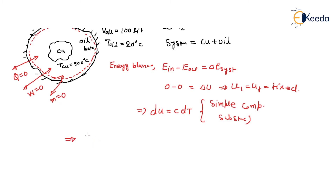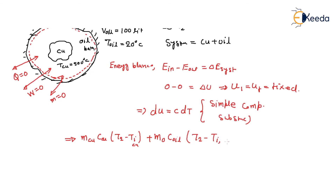The internal energy equation gives: mass of copper times specific heat of copper times (T2 minus initial temperature of copper) plus mass of oil times specific heat of oil times (T2 minus initial temperature of oil) equals zero. Solving this gives a final equilibrium temperature T2 of 29.9 degrees centigrade.